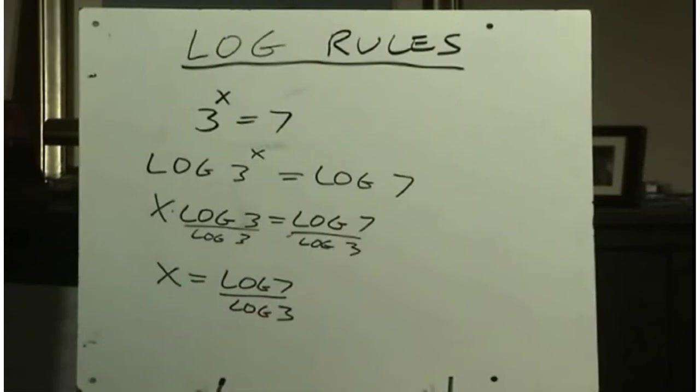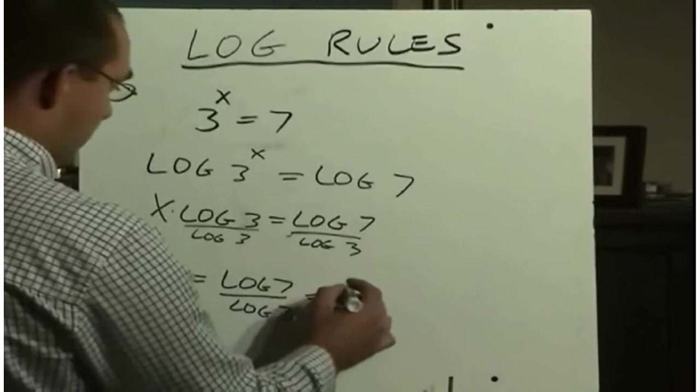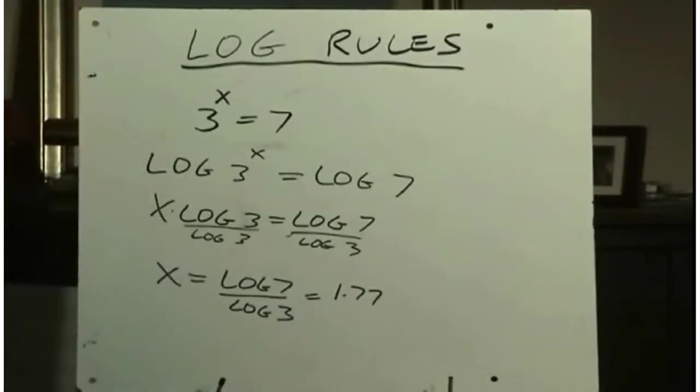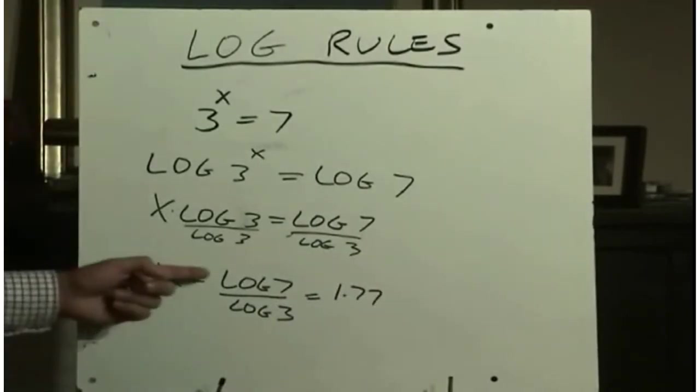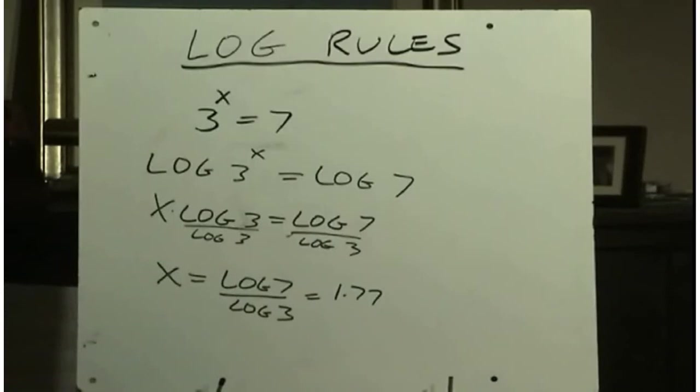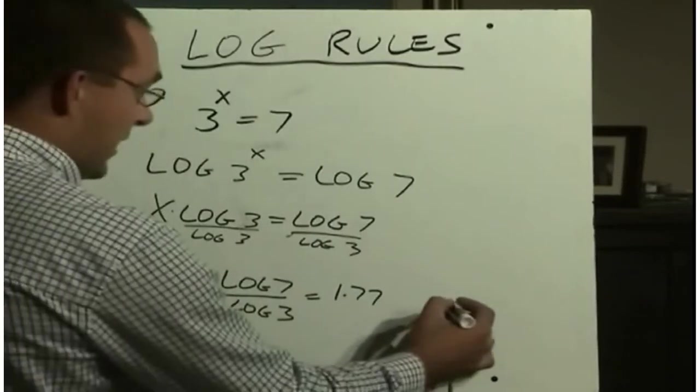And so I get log 7 divided by log 3, which of course we've already figured out is 1.77, because it was like that example before. You just go log 7 divided by log 3. Or if I wanted to write this as an exact answer.